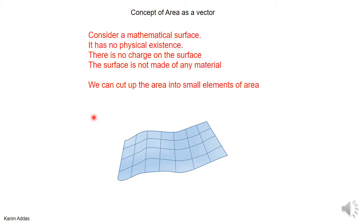Let's imagine we take a mathematical surface. It's important to note that this surface has no physical existence. There's no charge on the surface. It's not made of any material. It's a purely fictional surface that we create in our minds to solve or describe a particular problem.